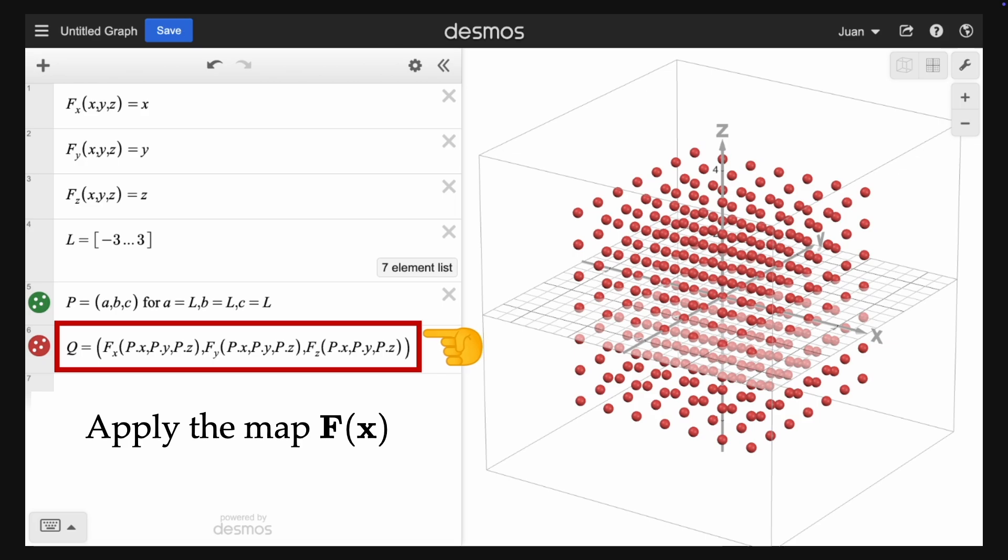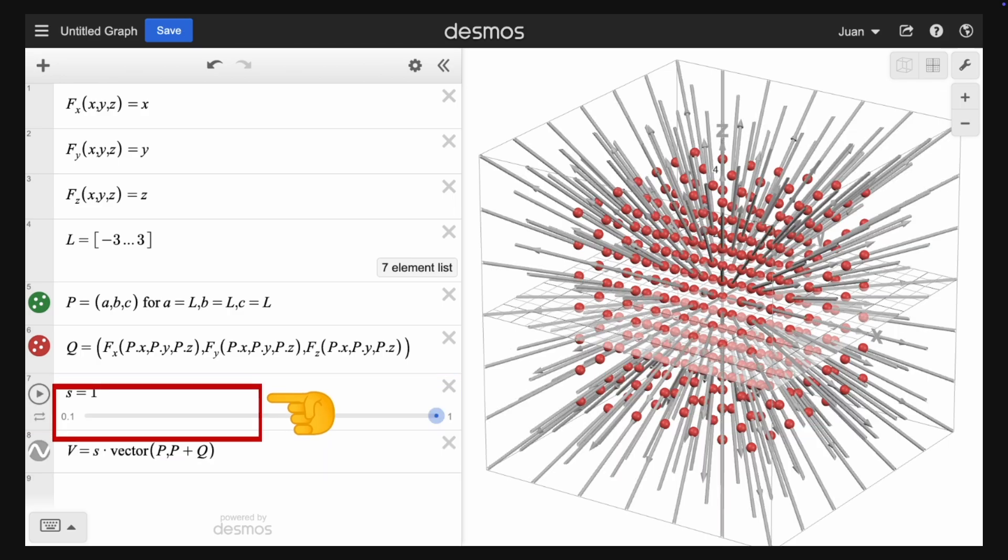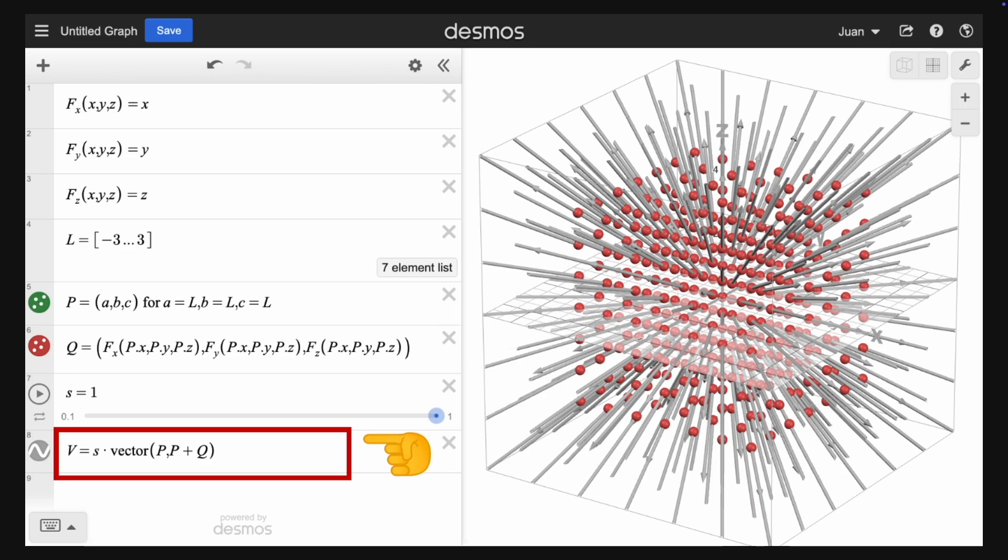Notice here in Desmos, using lists is a little bit easier. Now let's define our scale factor S. Finally, let's plot the vector field by typing the following expression S, the scale factor, times vector from point P to the point P plus Q.